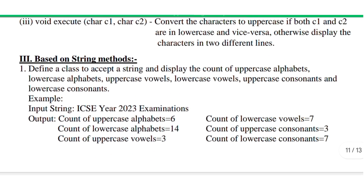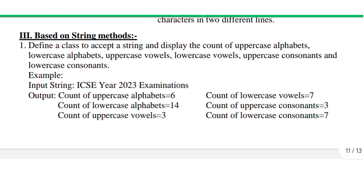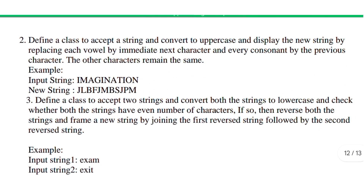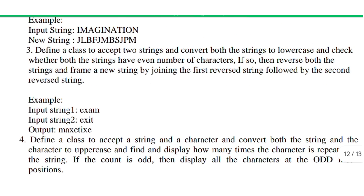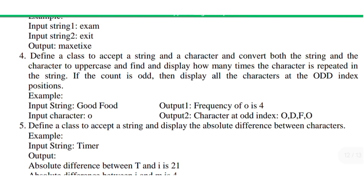There are three overloaded methods shown: one based on a pattern, one on a special number, and one based on a string or character. For string-based questions, examples include accepting a string and counting the number of lowercase and uppercase alphabets, or accepting a string and replacing each vowel with the immediately next character — for example, 'i' is a vowel so it gets replaced by 'j'.